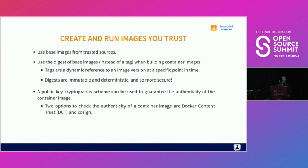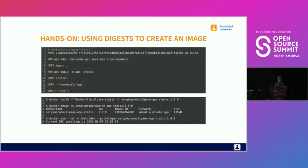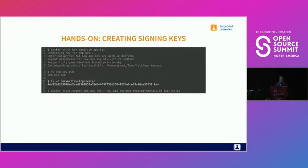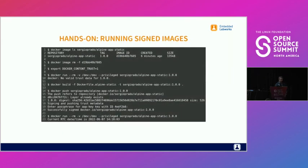Another approach is to sign and verify the signature of images. Docker has Docker Content Trust for this. I'm not going into full detail — it could take a full presentation — but it's well documented on the Docker website. The idea is that when you push an image to a registry you sign it, and when you pull and run it the signature is checked to ensure you're using an image from a trusted source.